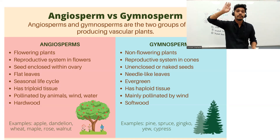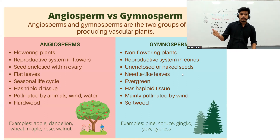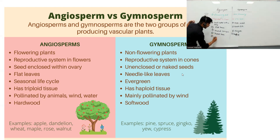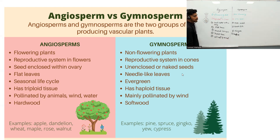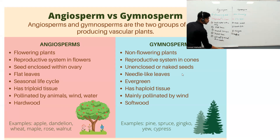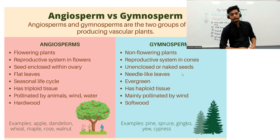Pollination is the transfer of pollen grains from one place to another. In angiosperms, pollination is done by animals, birds, insects, wind, and water — both biotic and abiotic factors. In gymnosperms, pollination is only by wind — they depend entirely on wind pollination.